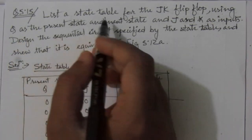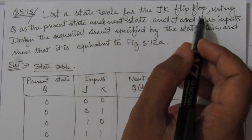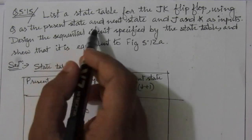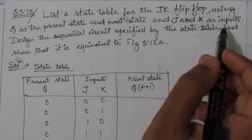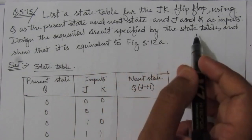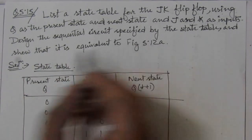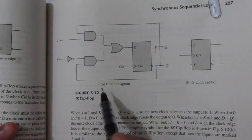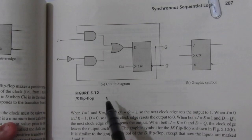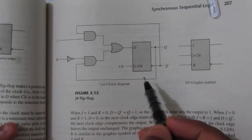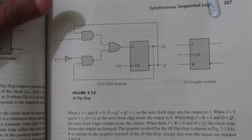The problem is to list a state table for the JK flip-flop. We have to consider a JK flip-flop using Q as the present state and next state output, and J and K as the inputs. Then we have to design the sequential circuit specified by the state table so that it is equivalent to figure 5.12.